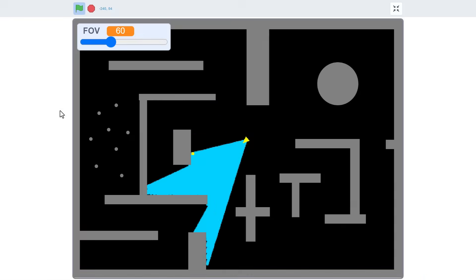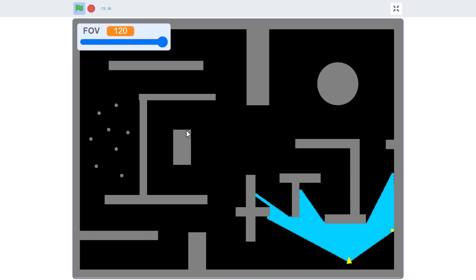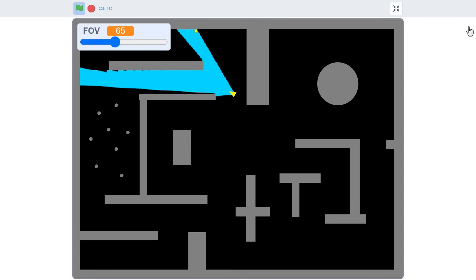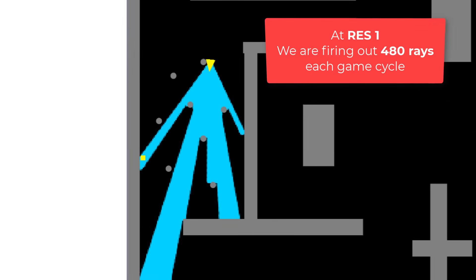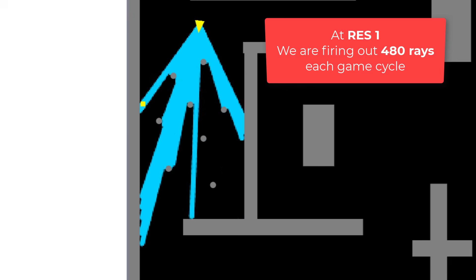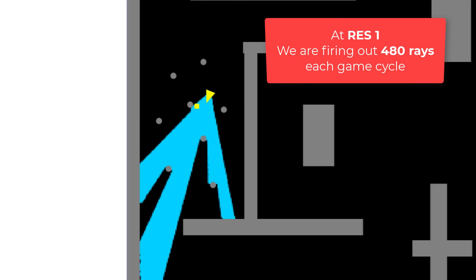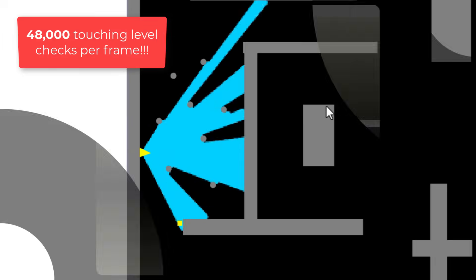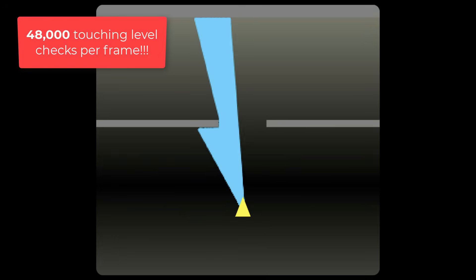The question is, what in general makes bitmap raycasting so slow? Well, it's because we are doing so much work. At a resolution of 1, we are firing out 480 rays each on every game cycle. And each ray has to travel hundreds of pixels potentially. Wow, well that's like 48,000 pixels to scan each and every game tick. Crazy!